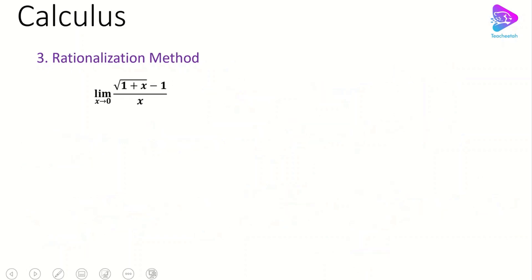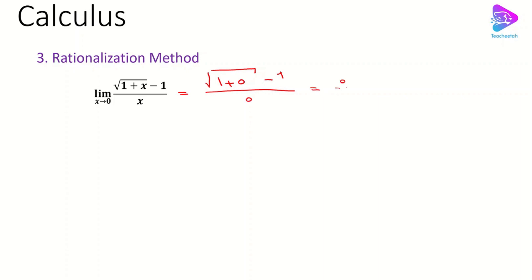The third approach is the rationalization method. With rationalization, we make an expression rational by using the properties of conjugate pairs. In this example we have the rational function with the square root of (1 plus x) minus 1 in the numerator, and x in the denominator, as x approaches 0. Plugging in 0 gives the square root of 1 minus 1 over 0, which is 0 over 0 — an indeterminate form.